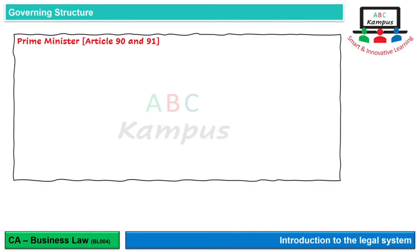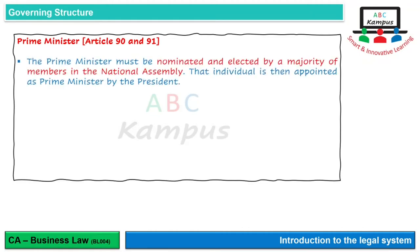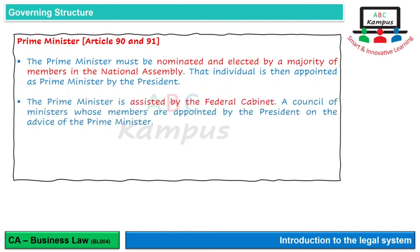Prime Minister سے related Article 90 اور 91 ہیں Constitution میں. Prime Minister must be nominated and elected by a majority of members in the National Assembly. جو ہم General Elections میں Members of National Assembly appoint کرتے ہیں، ان میں سے ایک person کو nominate کیا جاتا ہے، اور majority of members - جس party کے یا coalition کے - وہ ایک person کو nominate اور elect کرتے ہیں، پھر اس individual کی appointment President کی طرف سے ہوتی ہے as Prime Minister. Prime Minister کے support کے لیے ایک federal cabinet ہوتی ہے، جسے کابینہ کہتے ہیں، جس میں تمام ministers ہوتے ہیں - it is a council of ministers whose members are appointed by the President, but on the advice of Prime Minister.